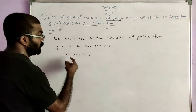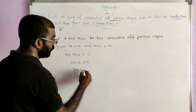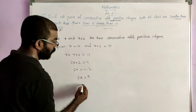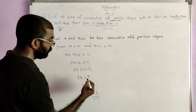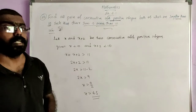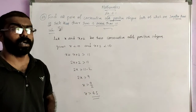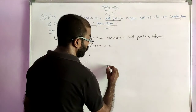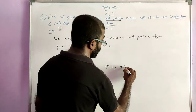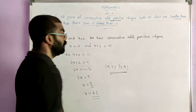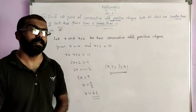We can solve this inequality: X plus X is 2X, so 2X plus 2 is greater than 11. 2X is greater than 11 minus 2, that is 2X is greater than 9. X is greater than 9 by 2, so X is greater than 4.5. Now we can write the pairs of consecutive odd positive integers. The odd positive integer after 4.5 is 5. So one pair is 5, 7. The next pair is 7, 9. We can't write 9, 11 because X and X plus 2 must be less than 10. So these are the required pairs.